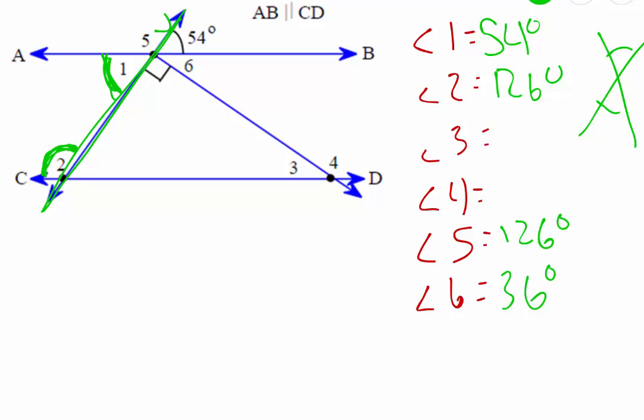If angle two is 126 degrees, angle two along with this angle over here have to be 180 degrees. So that means that this angle right over here has to be 54 degrees, which means we now have this angle here which is 54 degrees, this angle here which is 90 degrees. A triangle has 180 degrees inside so angle three has to be that left over.